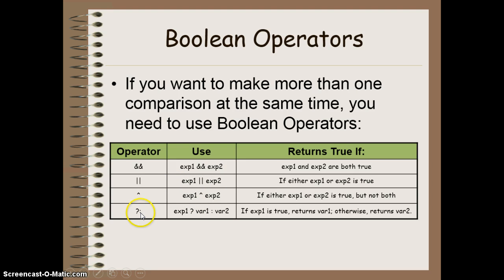And then finally here, we've got this option, which is if expression one is true, return this variable. Otherwise, if expression one is false, return this variable. And this is useful. It's very rare that you actually use this, but it's useful, for example, in converting Boolean operators into integer values or vice versa.